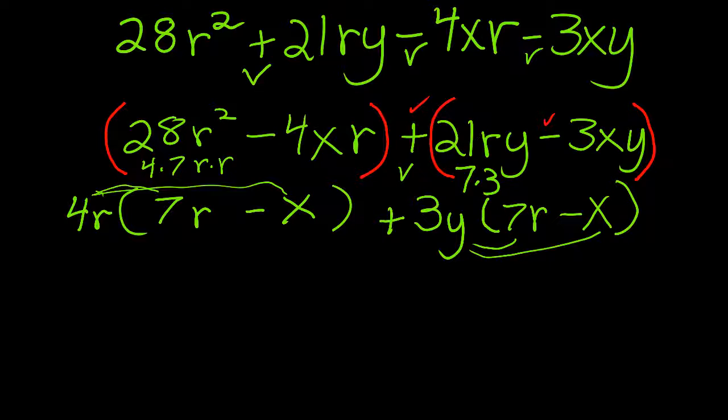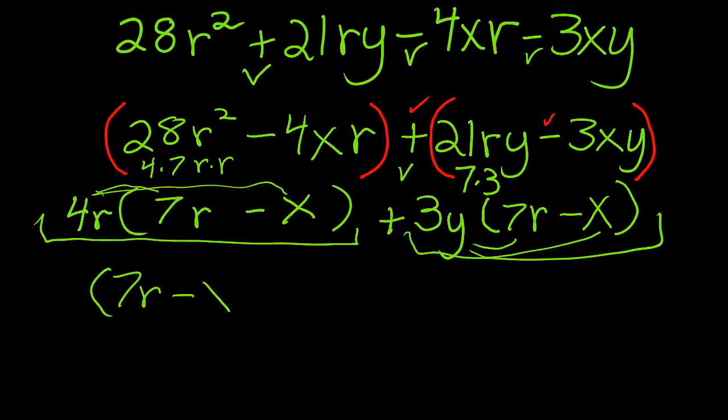Now, notice that on this side of the expression and this side of the expression, I have 7r minus x. That becomes my GCF. And then I make a second set of parentheses, and I write the leftovers. 4r plus 3y.